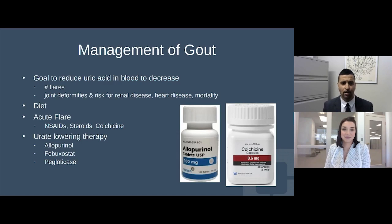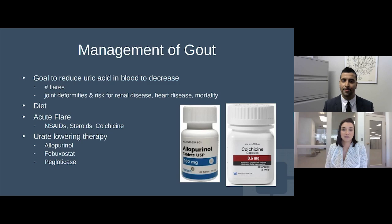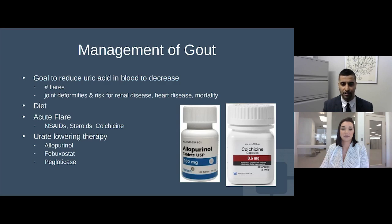We manage gout both non-pharmacologically and pharmacologically. Non-pharmacologically: reducing weight, avoiding type 2 diabetes, chronic kidney disease, and metabolic syndrome, and staying away from foods high in purines — red meat, shellfish, shrimp, and alcohol. In an acute gout flare, we give prednisone, NSAIDs like indomethacin, or colchicine. For chronic therapy, we aim at reducing uric acid in the blood with medications like allopurinol and febuxostat.